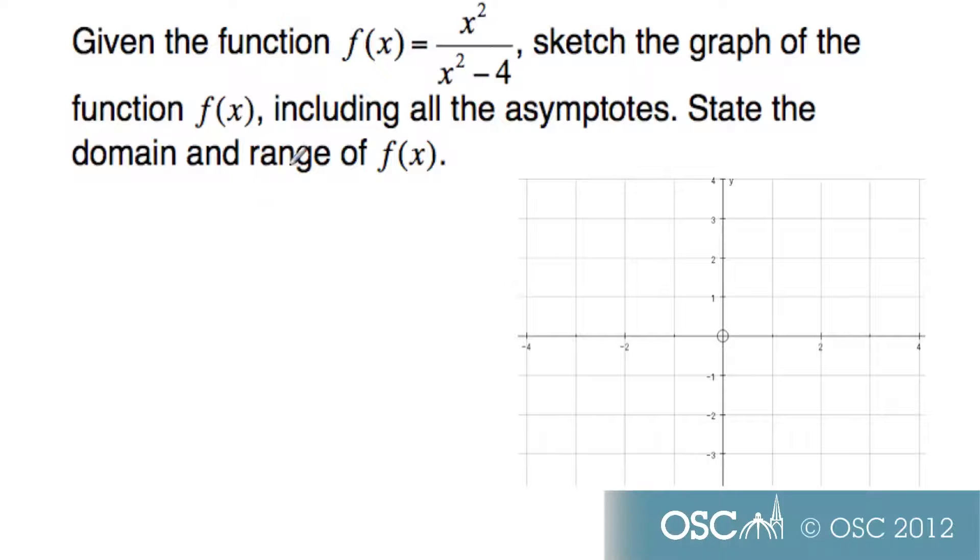For this problem, we're going to have to consider graphing this rational function. The key to rational functions is considering asymptotes. There's a clue in the question that we know we have asymptotes. But rational functions, a typical characteristic is that there are asymptotes that exist.